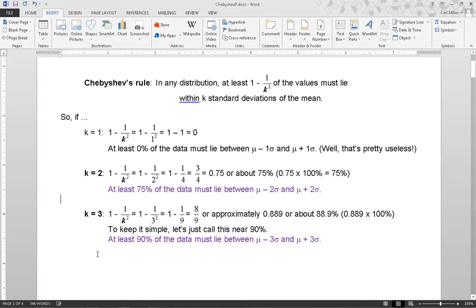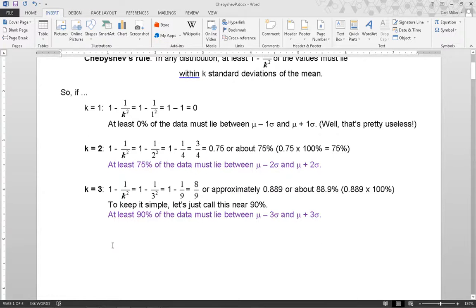k equal to 3, 1 minus 1 over k squared equals 1 minus 1 over 3 squared which equals 1 minus 1 over 9 or 8 ninths or approximately 0.889 or about 88.99%. So, at least 90% of the data must lie between mu minus 3 sigma and mu plus 3 sigma.